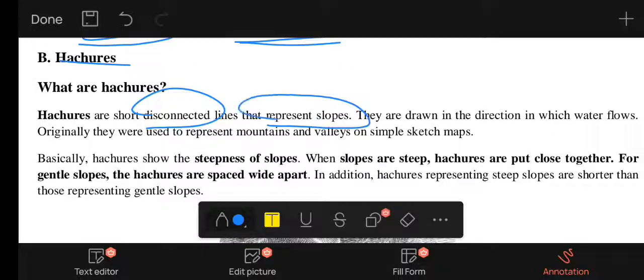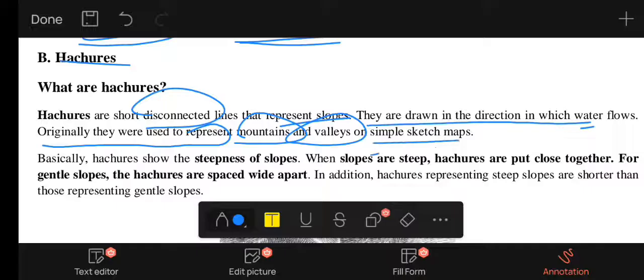Hachures are used to show the direction in which water flows. Originally they are used to represent mountains and valleys on simple sketch maps.